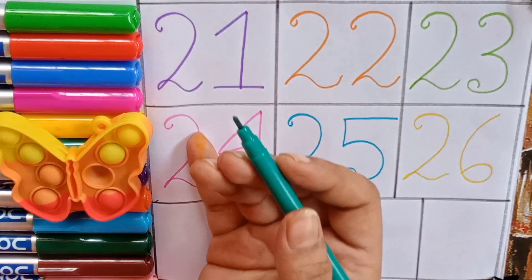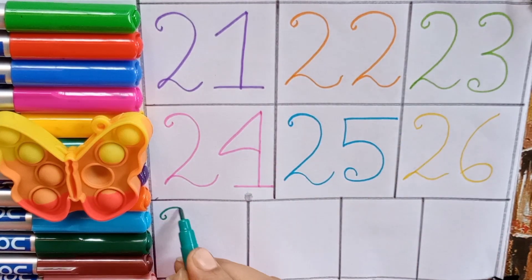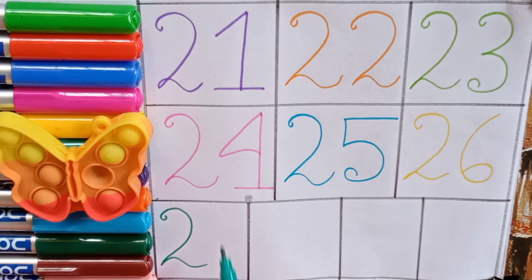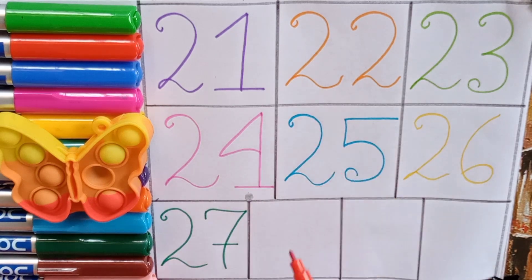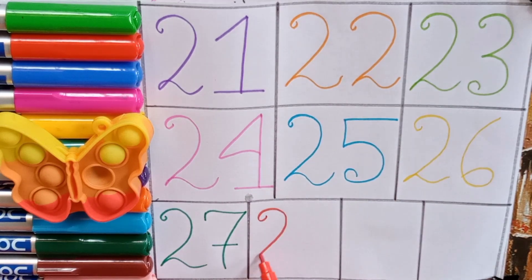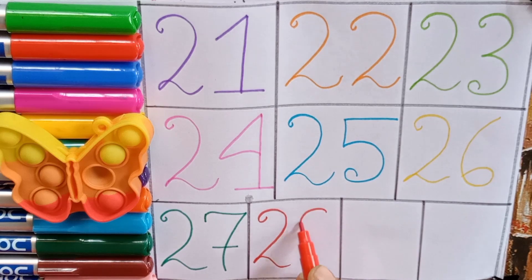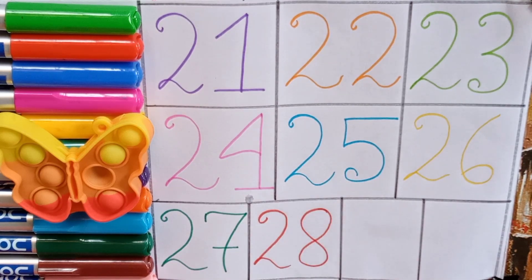Green, two, seven, twenty-seven. Two, seven, twenty-seven. Red, two, eight, twenty-eight. Two, eight, twenty-eight.